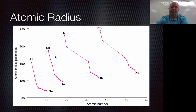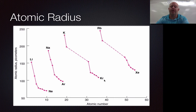That trend continues for all the different periods — sodium to argon, potassium to krypton, and so forth. If you have your periodic table out, take a look: potassium across to krypton. Potassium is the biggest element in that period, and krypton is the smallest.